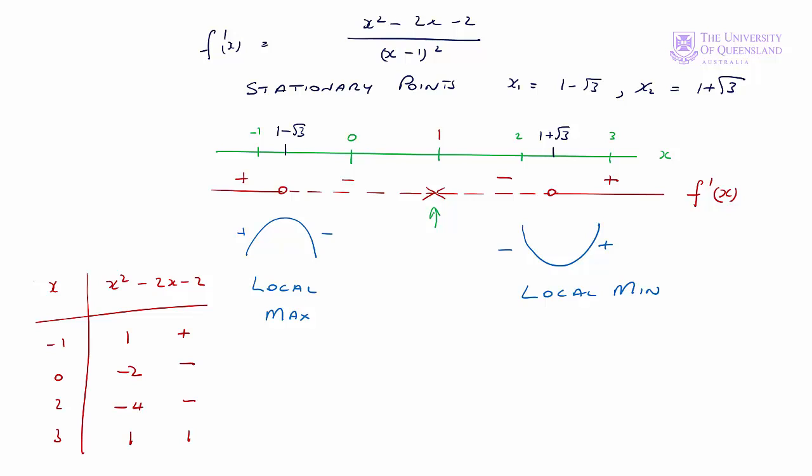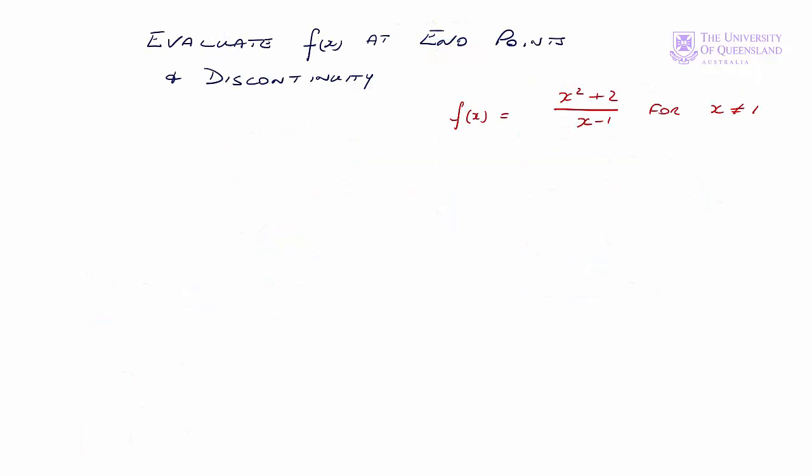So now we've found and classified the internal stationary points. The next step is to classify the endpoints of our domain and any points of discontinuity. We found the internal stationary points using the first order condition. Now we'll evaluate our function at the endpoints and the point of discontinuity. Recall our function was x squared plus 2 on x minus 1. The point of discontinuity was at x equals 1. Let's look at the endpoints first.